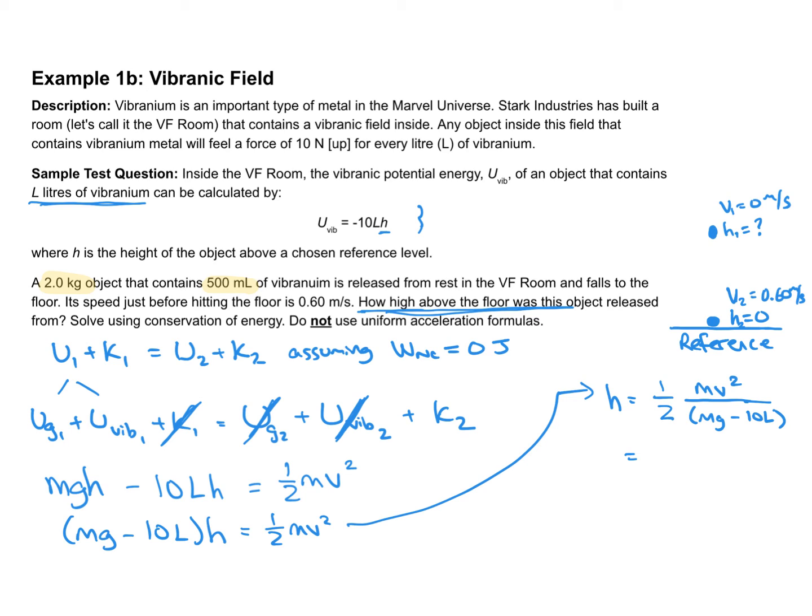Let's substitute the values in. Half, the mass is two kilograms, the speed was 0.60 meters per second which we're going to square. In the denominator, mass of two times g of 9.8 minus 10 times the liters—we're told it's 500 milliliters, which converts to 0.5 liters.